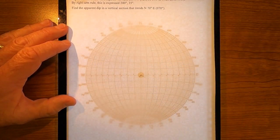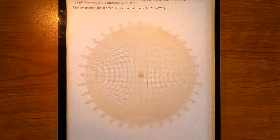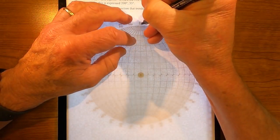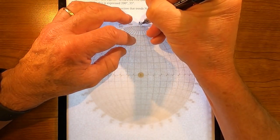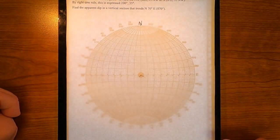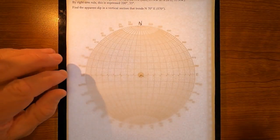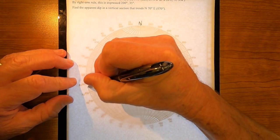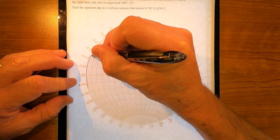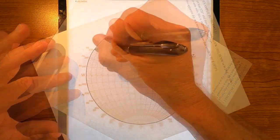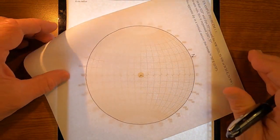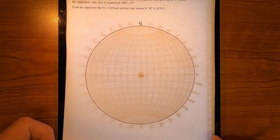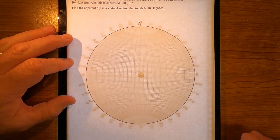I've got my overlay on my stereonet. What do I do first? I put north. What do I do next? I trace the primitive great circle. Now I'm ready to go.